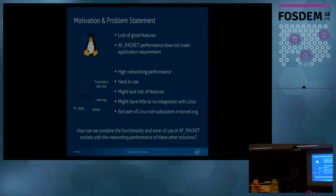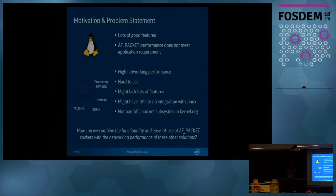After a while, they realize they're not getting the performance they want. What can be done? You can throw more cores at it, which as Intel we'd love, but it's not for everyone. It might not even be possible to throw more hardware at the problem. The typical solution is to go to a hardware vendor that provides a specialized NIC or specialized hardware. The problem is that usually you get a proprietary SDK, so you have to change your application, and if you want to try another hardware, you have to change the application again. They're usually hard to use and lack many Linux features.